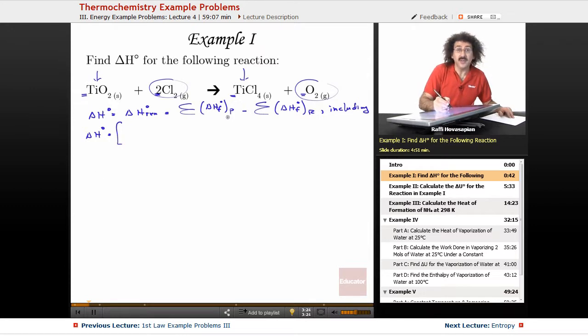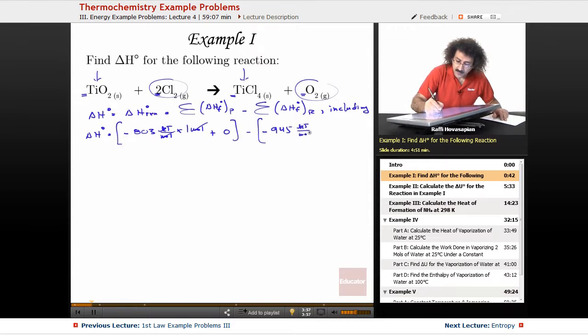So when we look up the enthalpy for the TiCl4, we have minus 803 kilojoules per mole times one mole. Okay, so those cancel. And then we add to it the enthalpy for this, which is zero. And then we subtract the sum of the enthalpies of formation for the reactants. We get, for the titanium dioxide, we look it up, minus 945 kilojoules per mole. And again, the coefficient on that is one, so it's times one mole. And then again, plus zero. So it's going to be minus 803 minus a minus 945.